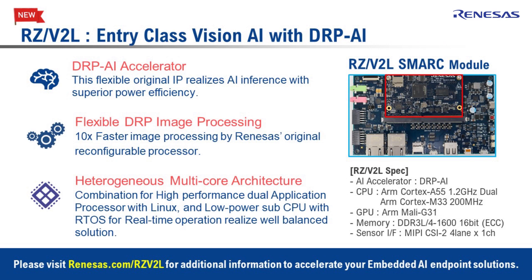In addition, we recently released a new entry-class RZV series product, RZV2L. RZV2L is equipped with DRP-AI. Although this product does not have a dedicated ISP block, it can still perform various image processing tasks thanks to DRP-AI flexibility.